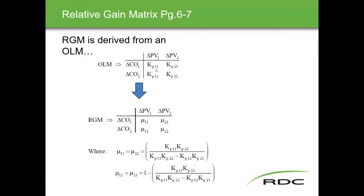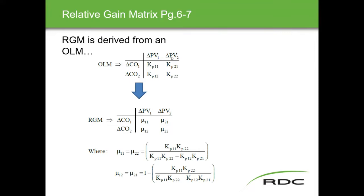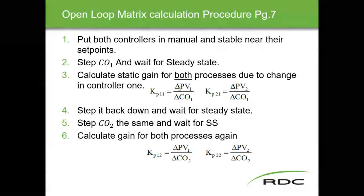To develop the relative gain metrics, we start with an open loop matrix. The open loop matrix is found by determining the static gains of the individual loops. That's the testing we do: make a 10% change in CO1, record the effect on PV1 and PV2, use the output-over-input formula, and get individual static gain values. Those values go into the formula, which gets converted into the relative gain metric matrix, filling it in using the associated formulas for positions 11, 22 and 12, 21.